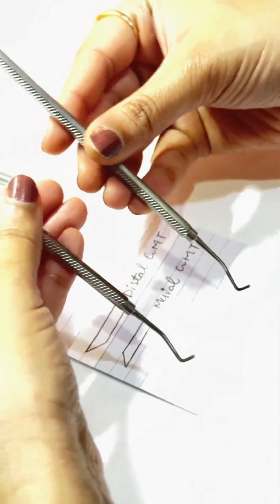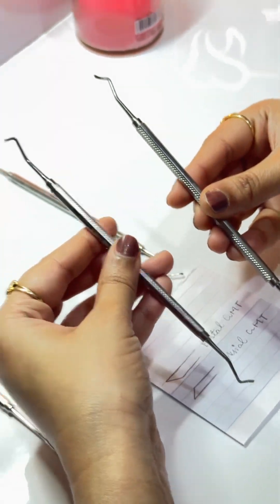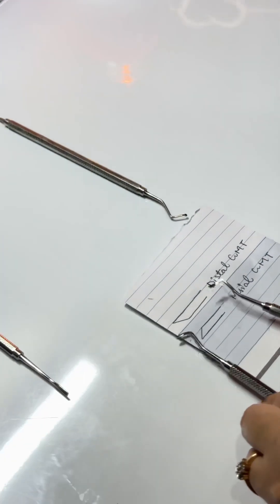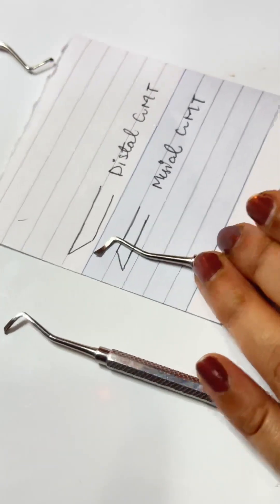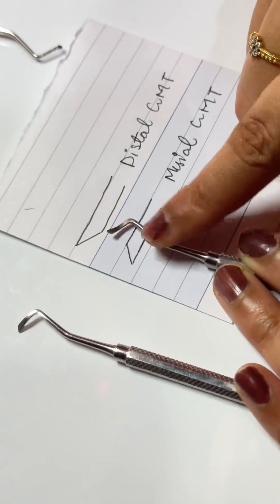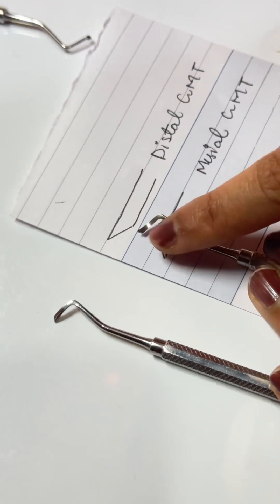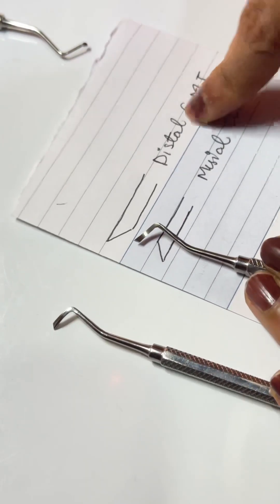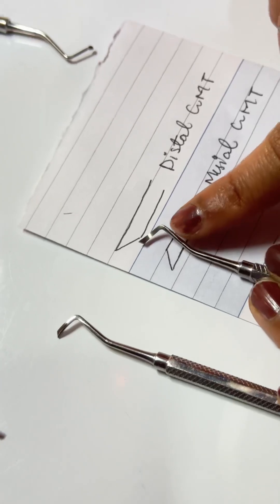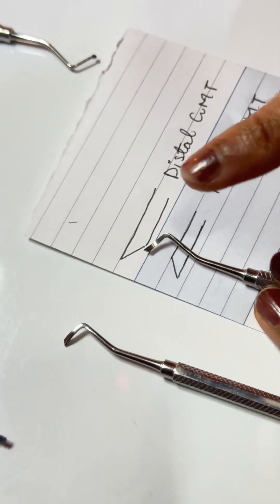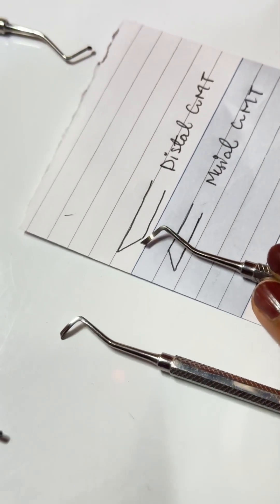Now let's find out which is mesial and which is distal. Focus here. See the cutting edge. Here it is pointing upwards. The cutting edge as I have drawn is pointing upwards, so this is mesial GMT.